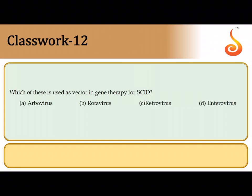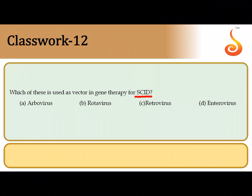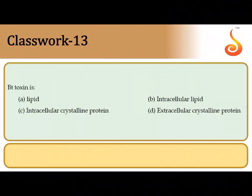The twelfth question: which vector is used in gene therapy for severe combined immunodeficiency? You have to introduce the ADA gene into the T cells extracted from the patient. For this, a retroviral vector is used — retroviral vectors are used to introduce the ADA gene into the T cells of a patient suffering from adenosine deaminase deficiency or SCID.